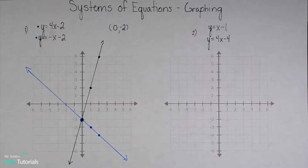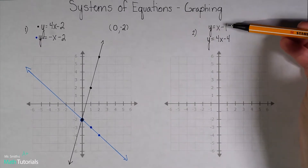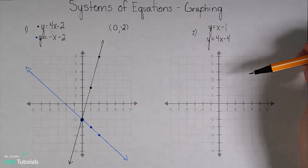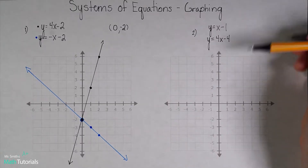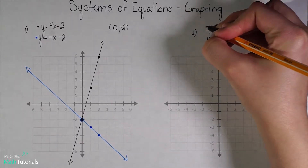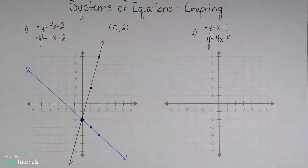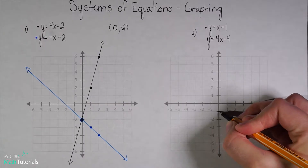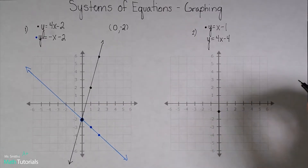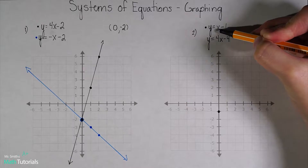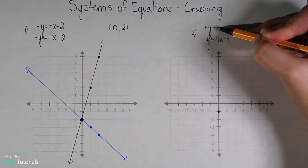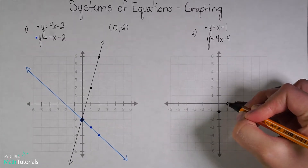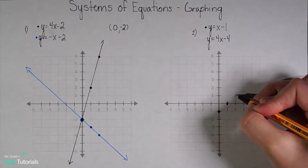Let's look at a second example. Make sure both equations are in y equals mx plus b, slope-intercept form — and they are. I'm going to graph this top one in black. I plot my y-intercept at negative 1, and my slope is a positive 1, which is positive 1 over positive 1, so I move up 1, right 1, and keep going up 1, right 1.